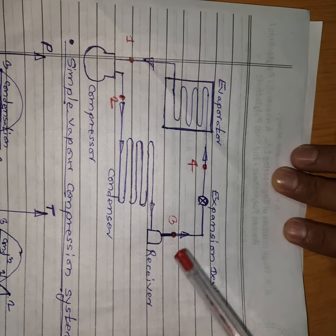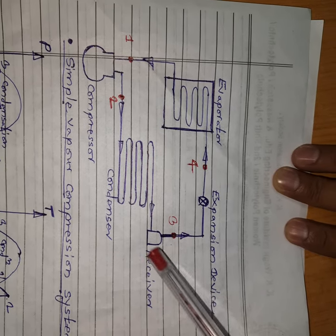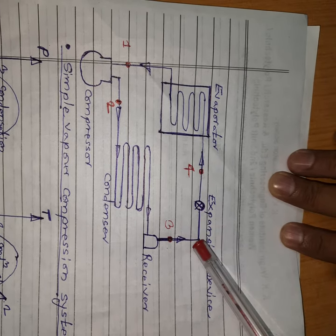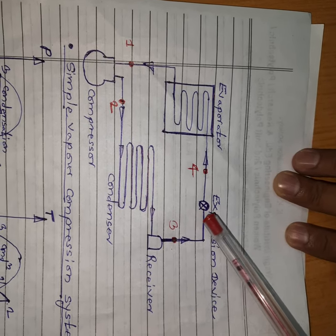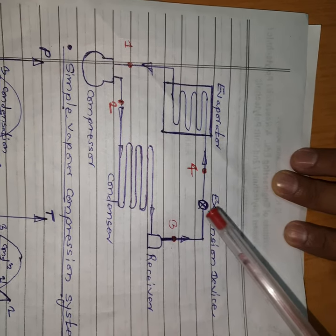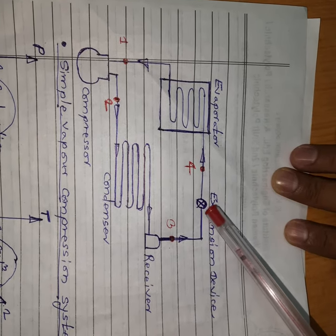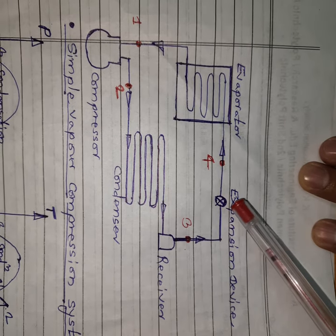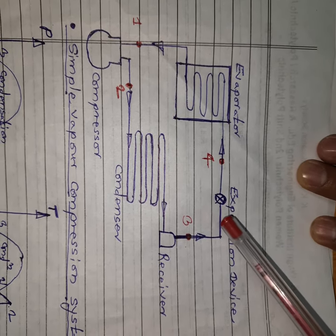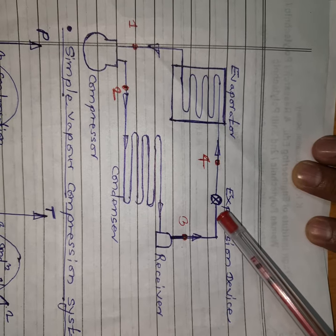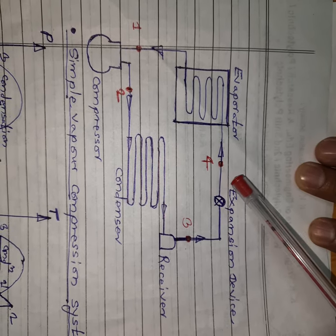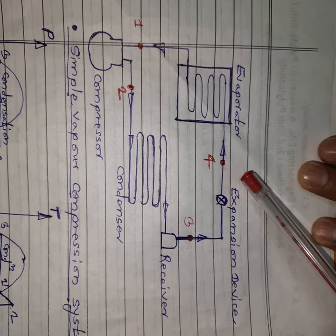The receiver is a device used for storage of the refrigerant before supplying it to the expansion device. In the expansion device — a capillary tube — the high pressure raised by the compressor is decreased. High pressure, normal temperature liquid refrigerant enters, and when leaving there is a decrease in pressure and accordingly a decrease in temperature.